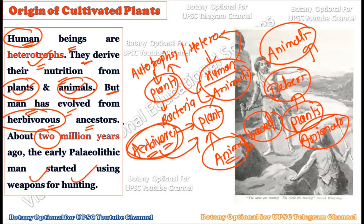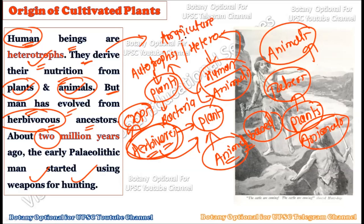It becomes very important to understand from where this plant material came, on which earlier human beings were dependent. Which crop plants were there on which humans were surviving? From here we get the hint for agriculture, because humans selected some plants from the wild and started using them as food material — this is where the origin of cultivated plants can start.